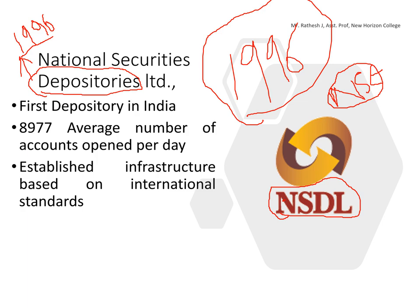NSDL, started by NSE in 1996, was the first depository in India. Till that time, there was not even a single depository. At present, there are only two depositories in India: NSDL and CDSL. CDSL is a subsidiary of Bombay Stock Exchange, while NSDL is a subsidiary of NSE.